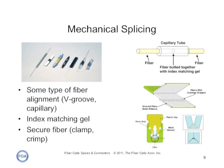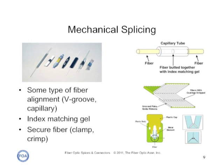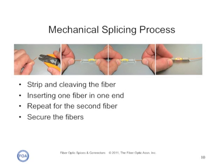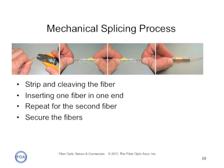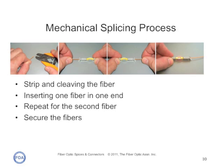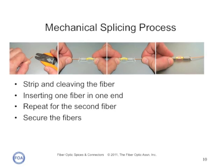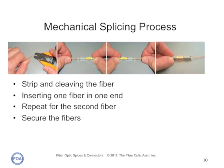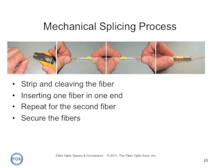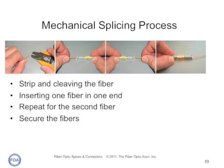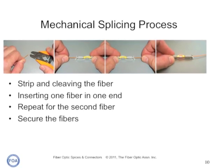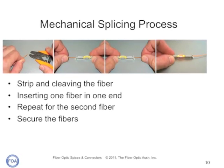However, you don't need the expensive machine you need for fusion splicing. Mechanical splicing is similar to fusion splicing, but simpler. You strip, clean, and cleave the fiber, insert the first fiber in one end of the splice, repeat with the second fiber, and secure the fibers. It's that simple.